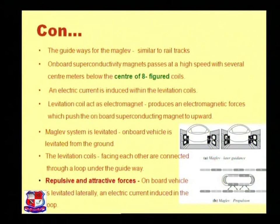Second thing, figure number A shows the maglev lateral guidance. Here these figures show S and N as the two poles of magnet and the maglev train flows off the rail track, which is called levitation. The maglev system is levitated, the onboard vehicle is levitated from the ground, and this matter is shown in figure number A.